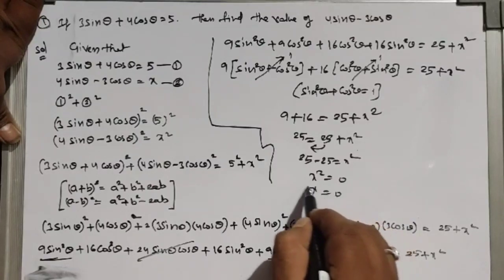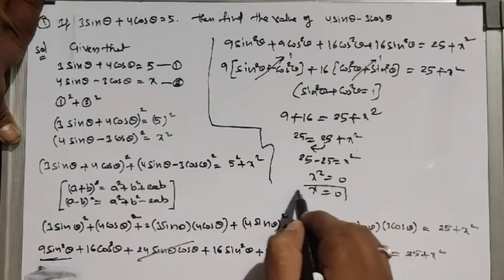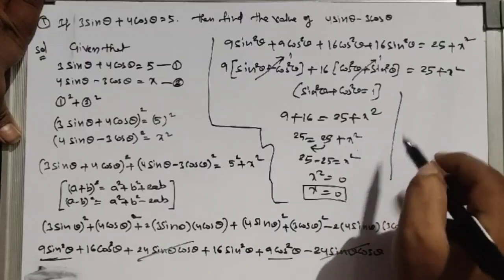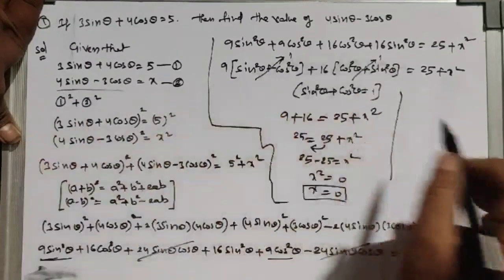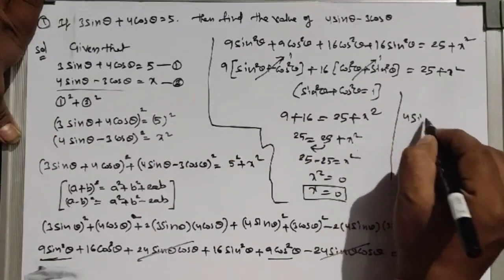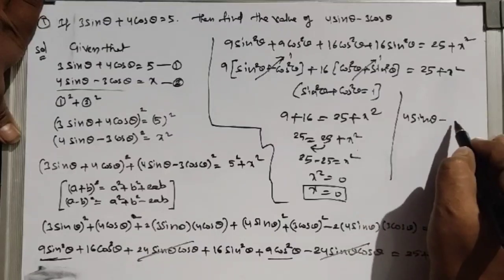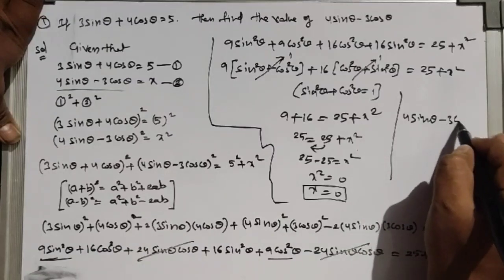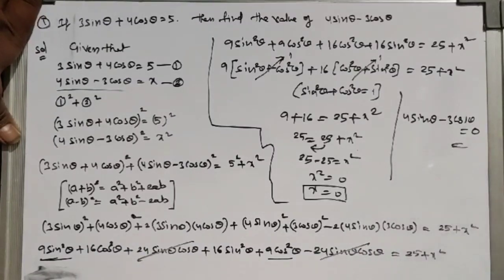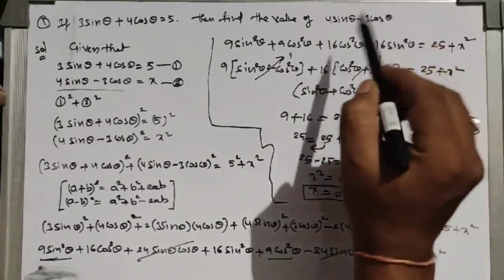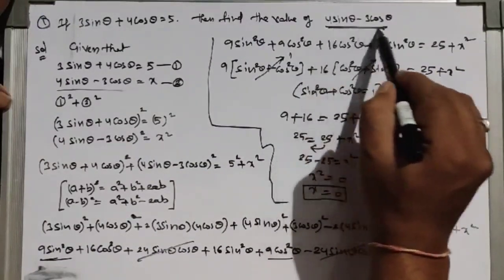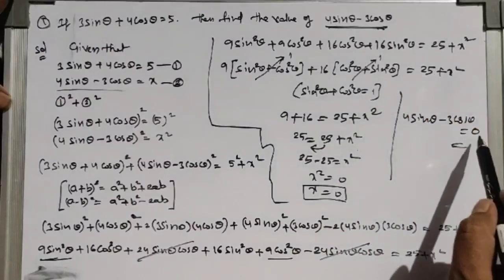Since x = 0 and x represents 4sinθ - 3cosθ, the answer is: 4sinθ - 3cosθ = 0.